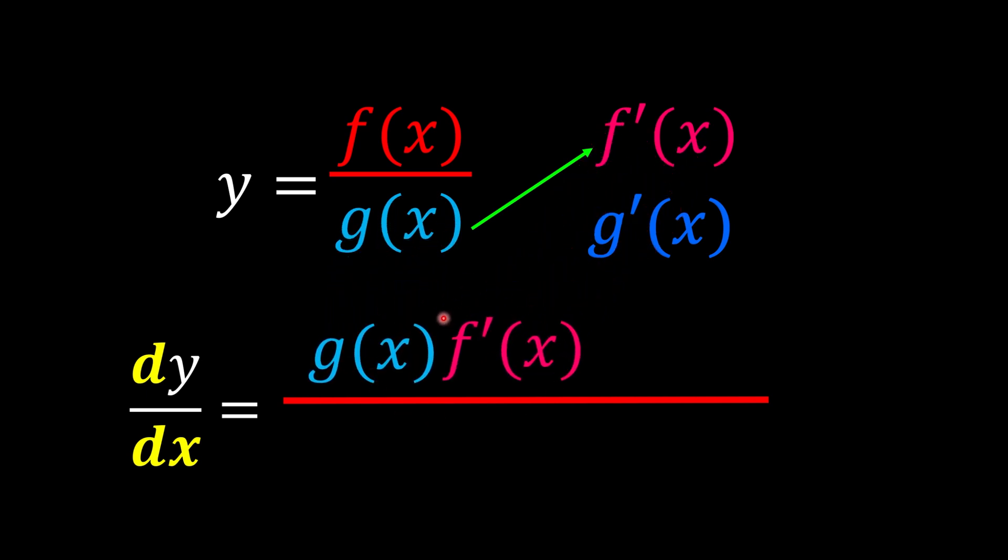We're going to times the first couple and minus the second couple, the one on top going down. So this one is going to be the second couple.